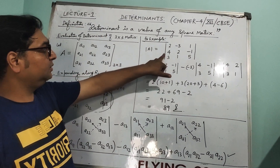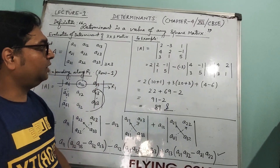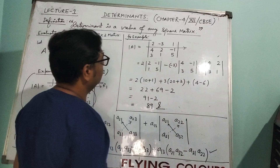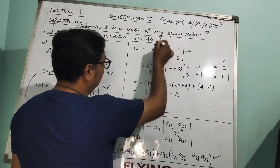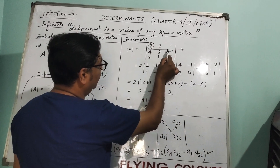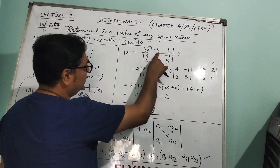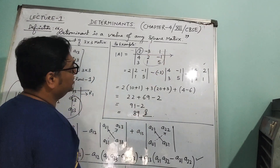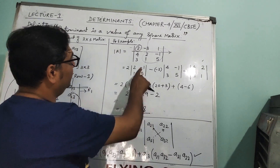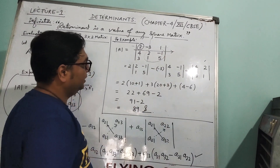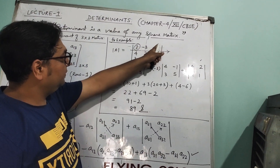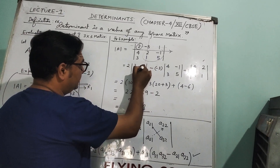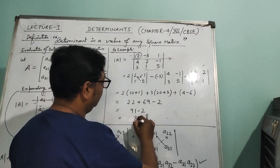We have a 3 by 3 determinant with entries 2, minus 3, 1 in row 1; 4, 2, minus 1 in row 2; and 3, 1, 5 in row 3. Expanding along R1: take 2, delete its row and column — you get the 2 by 2 determinant of 2, minus 1, 1, 5. Then use the minus sign, take minus 3, delete its row and column — giving 4, minus 1, 3, 5. Then use the positive sign, take 1, delete its row and column — giving 4, 2, 3, 1. Evaluating, you will get 18.